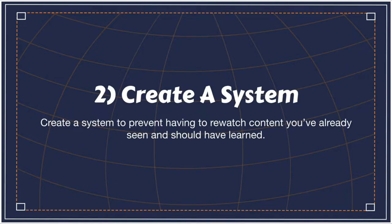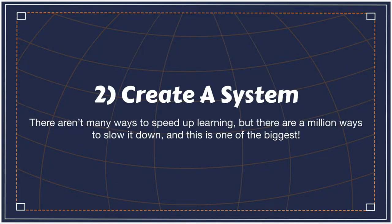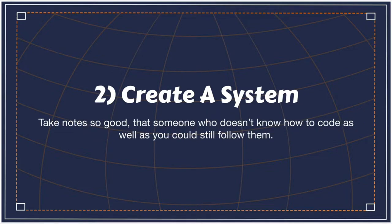Number two is to give yourself a system so that you don't have to re-watch content you've already seen. There are many ways to speed up the process, but there are a million ways to slow it down. This one is the biggest. What I did was start taking notes — very bad notes at first.